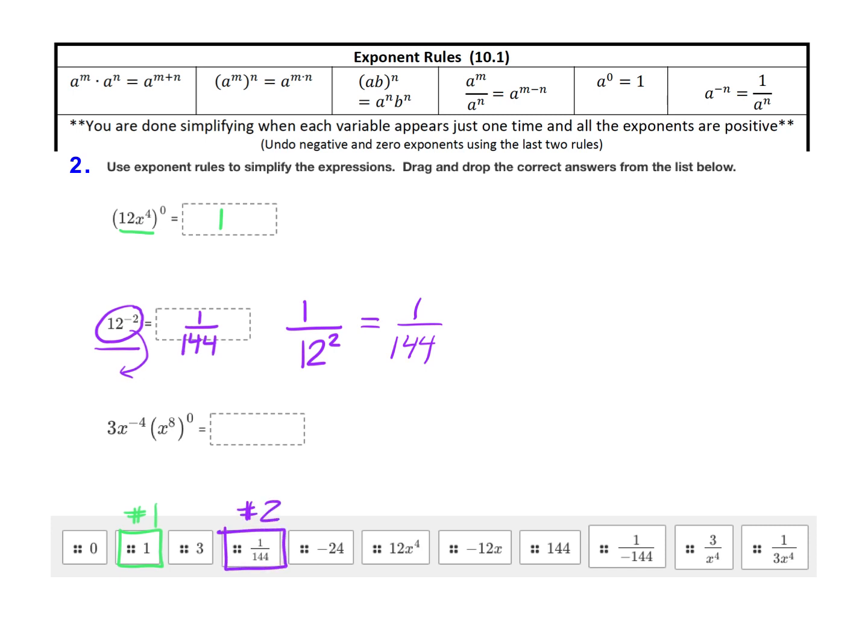For the last one here, notice that we have 3x to the negative fourth times x to the eighth raised to the power of zero. Now we know, just like the first problem, that anything to the power of zero is 1. So if we take 3x to the negative fourth and multiply it by 1, it's still 3x to the negative fourth.